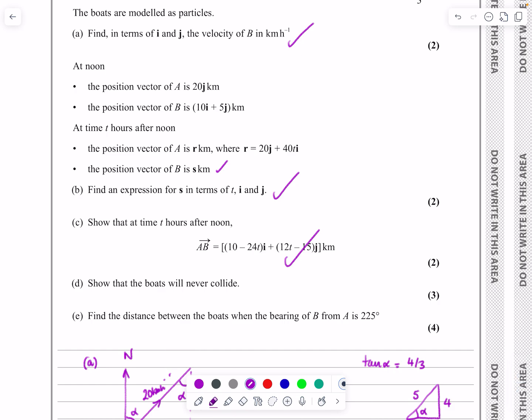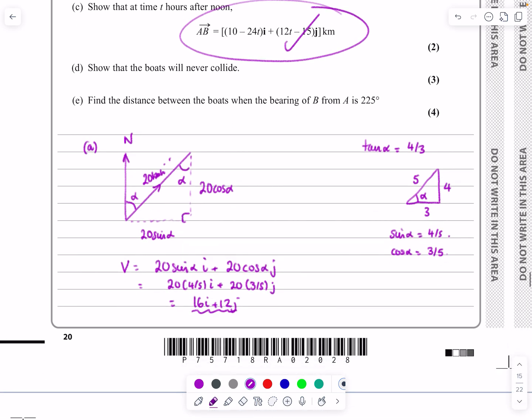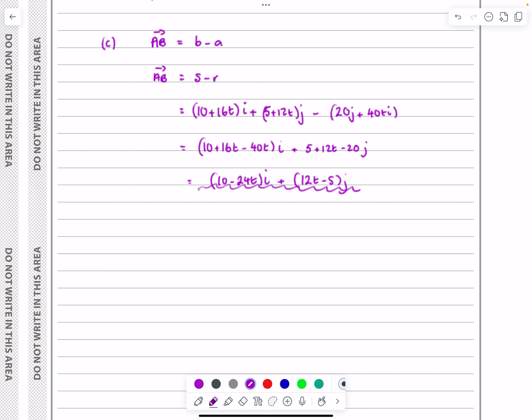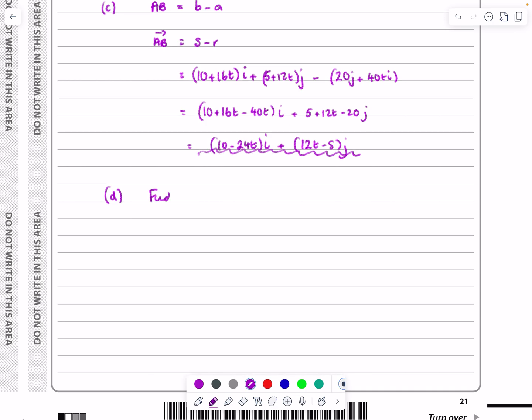Part D: Show that the boats will never collide. You've got lots of different ways of doing this. You could try and put the two position vectors equal to each other. But purely because they've already done this part for me, I think they're leading me down the path of saying, if that's the AB, if I can show that the minimum value of AB is greater than zero - if I can show the length is greater than zero for the minimum - then they won't collide. The distance between should be zero if they're going to collide. That's the way I'm going to do it.